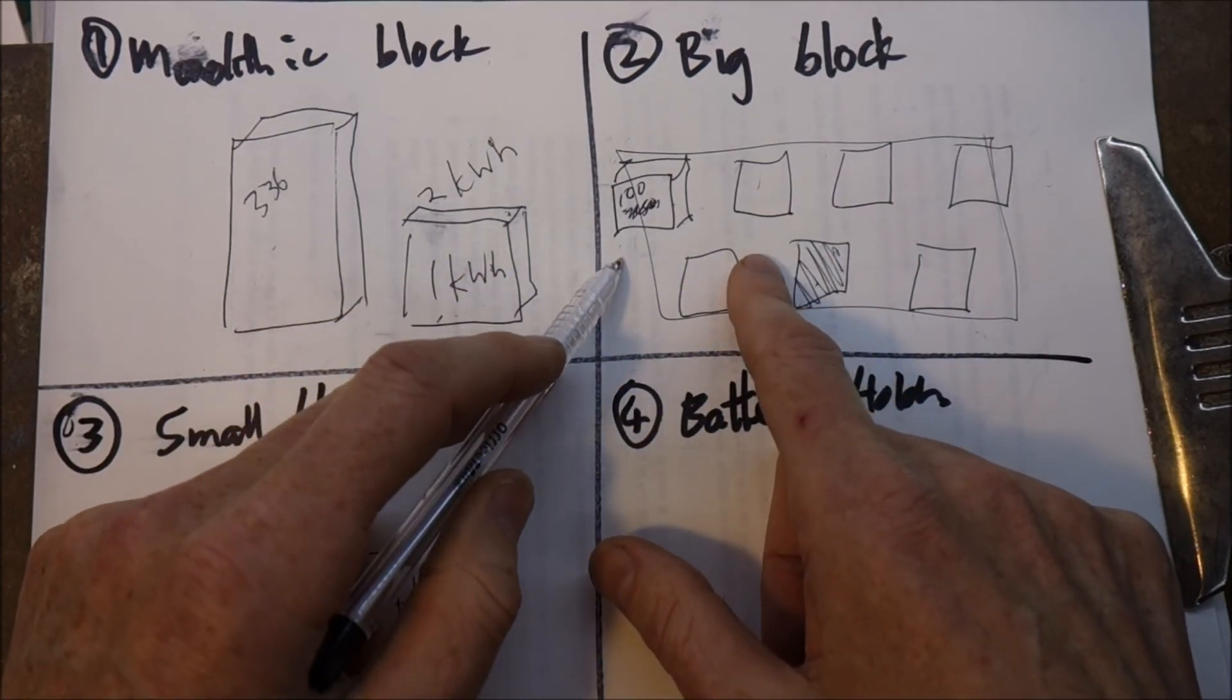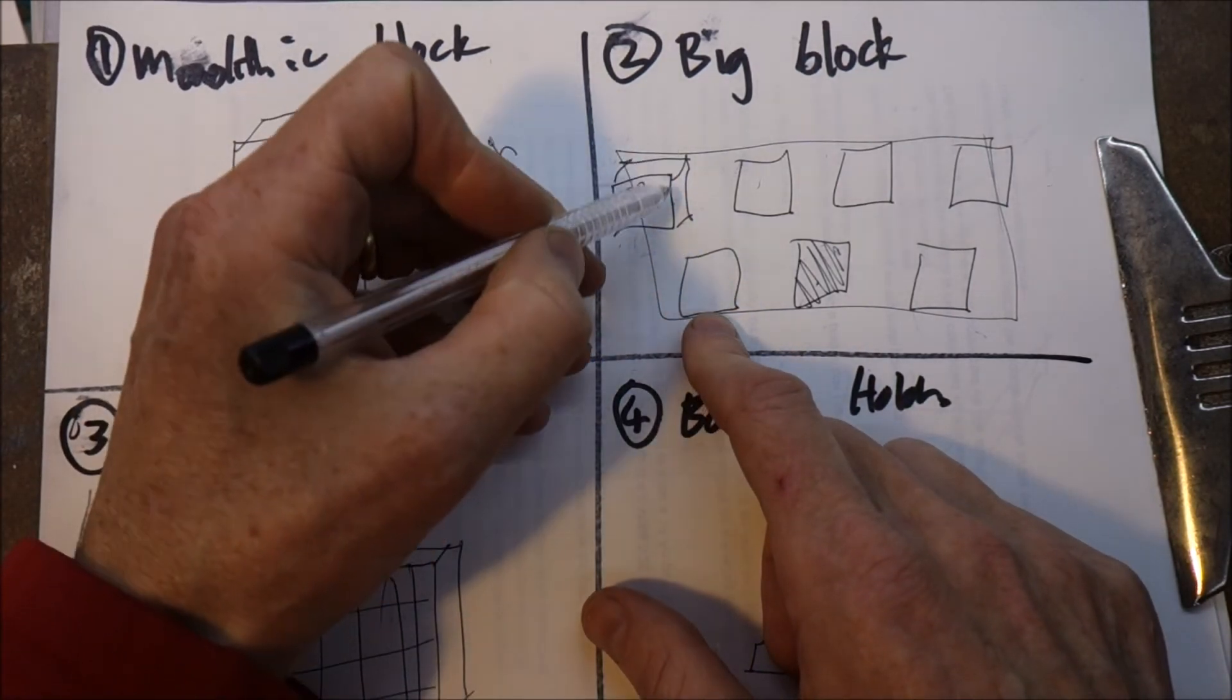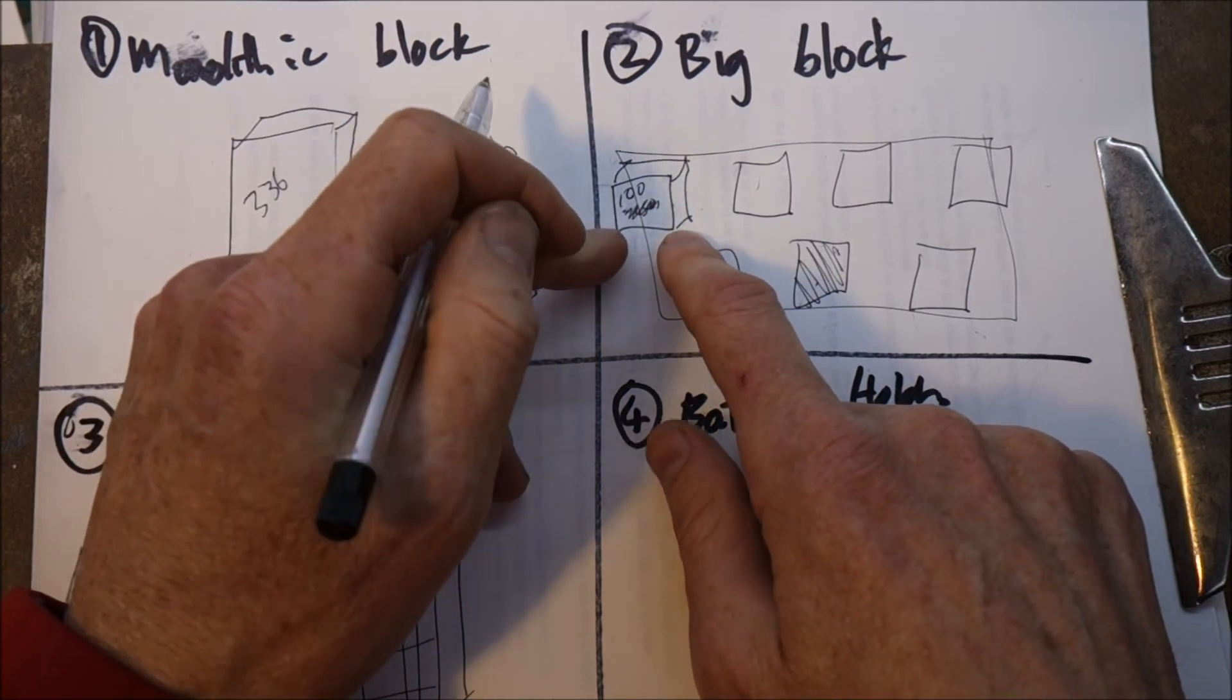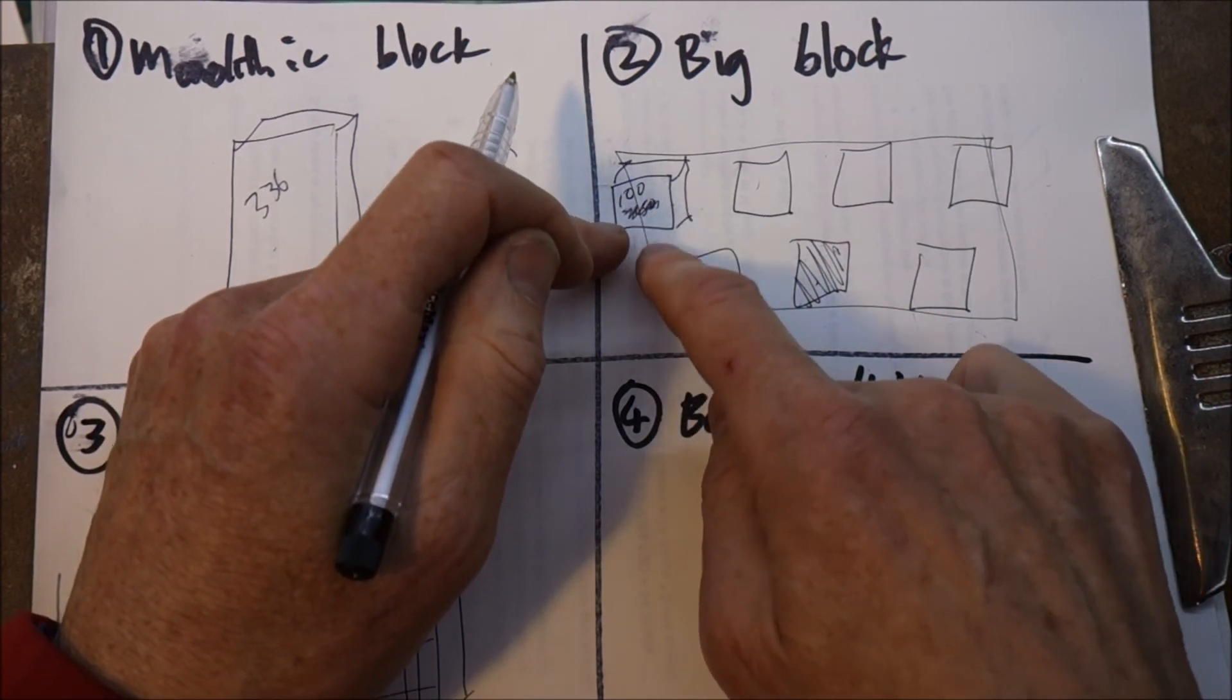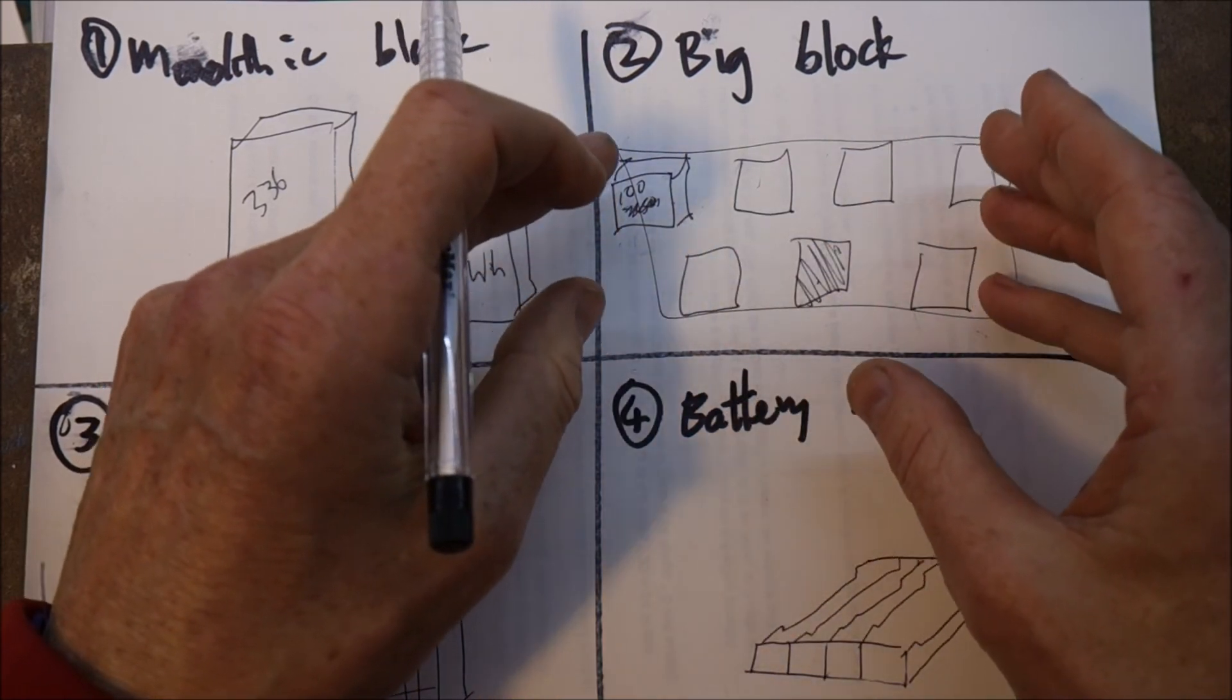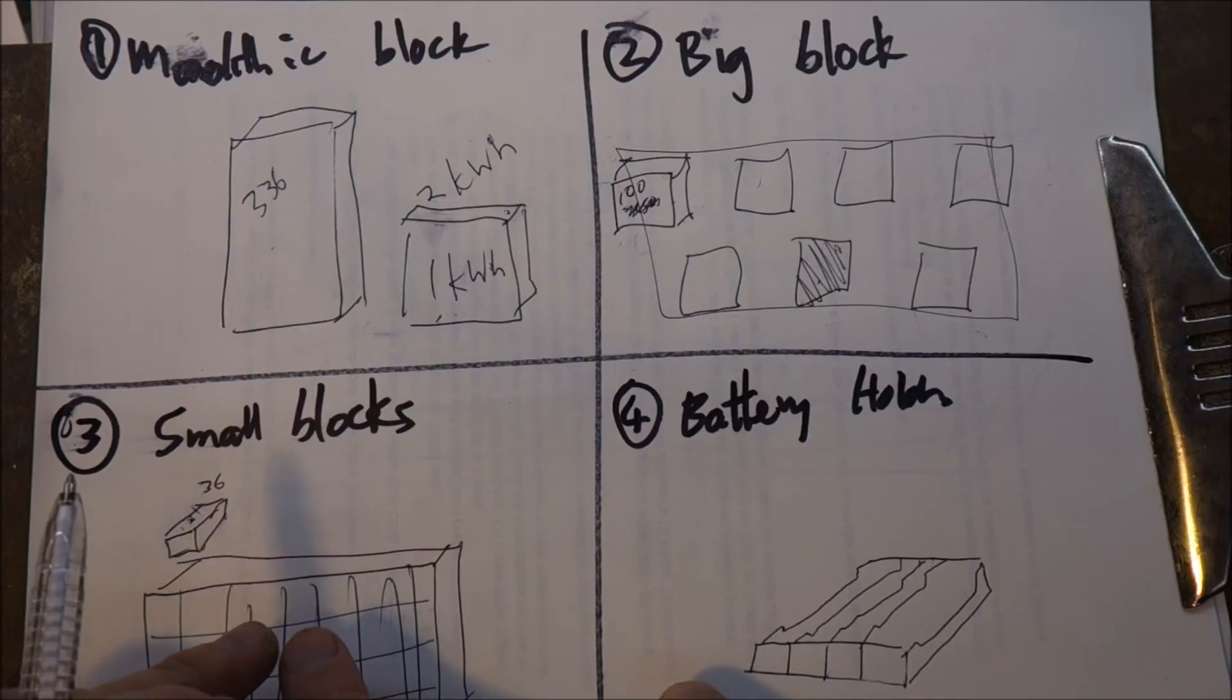I'm not keen on the big block, I'm not yet convinced that that's the right way to go. One of the things I don't like is the whole bus bar scenario, having to do big, massive bus bars, I'm not so keen on. And for a power wall, you don't need massive current flows, you want to prioritize capacity rather than current.